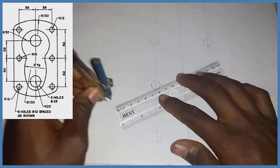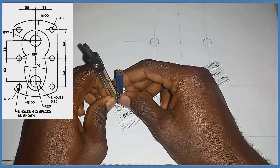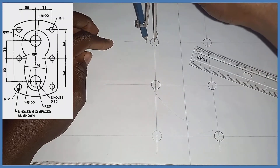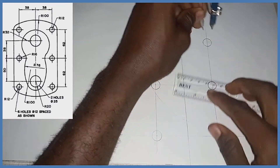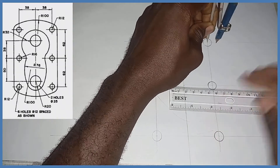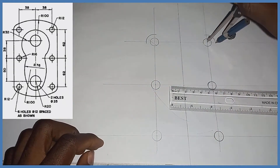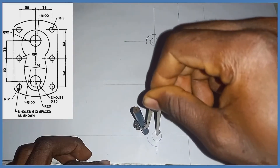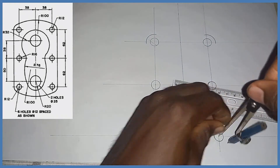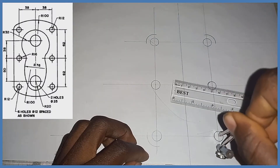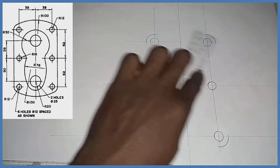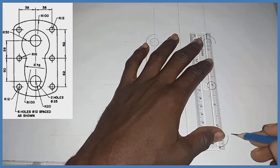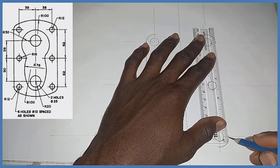The next thing is to pick my compass and measure radius 12. With radius 12 standing right here, I'm going to produce this; with radius 12 standing right here I produce this; and coming down here with radius 12 I produce that. Then picking my ruler and joining this mark to this mark in this manner — likewise on this area, joining the top to the bottom.